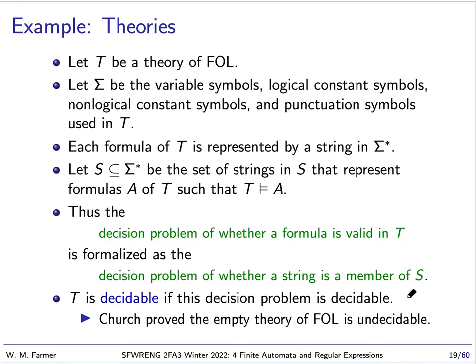The interesting thing is people will say that T is decidable if this decision problem is decidable. Some theories are decidable, some aren't. A theory is decidable if there is an algorithm that will tell me whether a given formula of that theory is valid in the theory or not. What Church proved is that the empty theory of FOL, the theory that has no axioms, is undecidable. Another way of saying this is that first-order logic is undecidable.